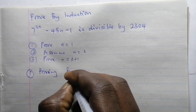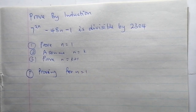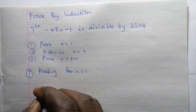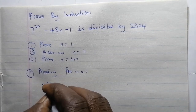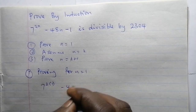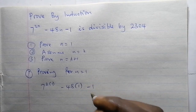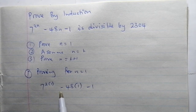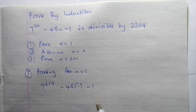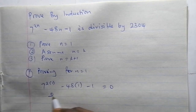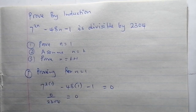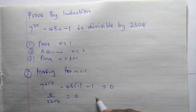Stage 1: proving for n equals 1. When n equals 1, the expression becomes 7 to the power of 2 times 1, minus 48 times 1, minus 1. That gives us 7 squared, which is 49, minus 48, minus 1, which equals 0. If you divide 0 by 2304 you get 0, which is an integer, so the statement is true for n equals 1.